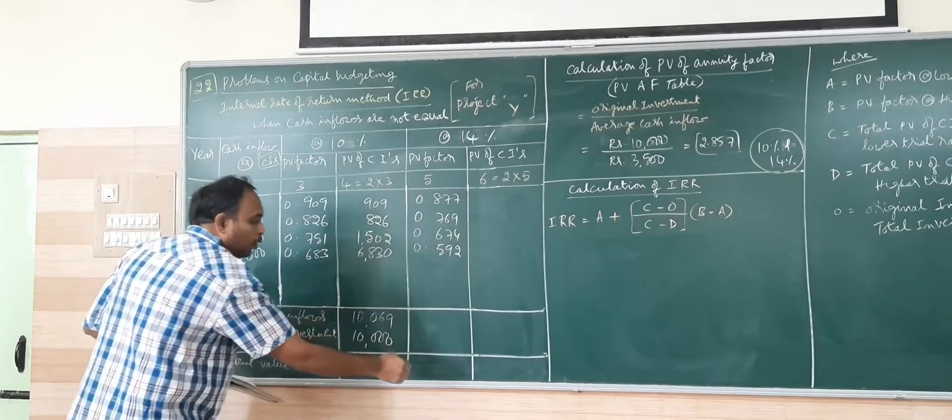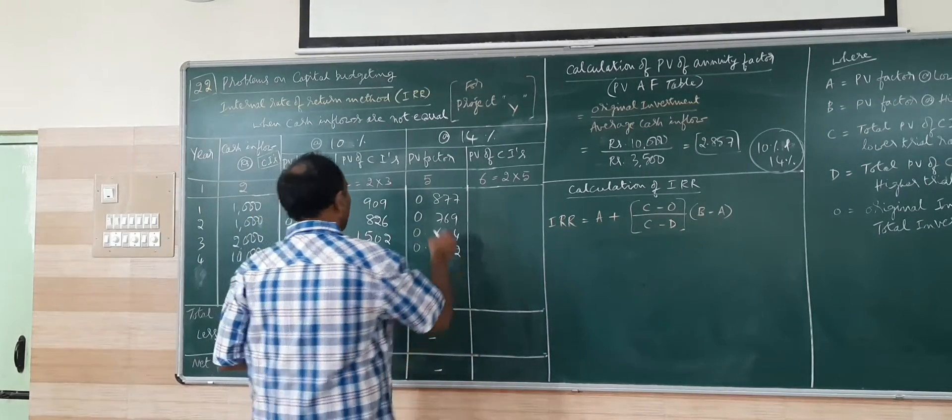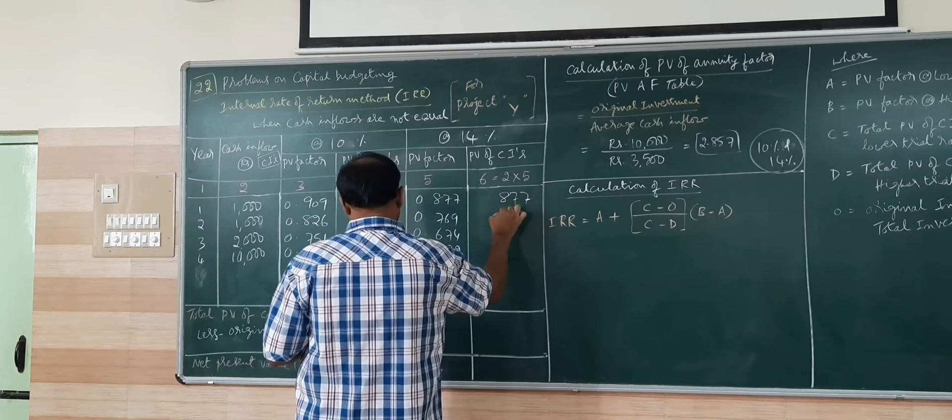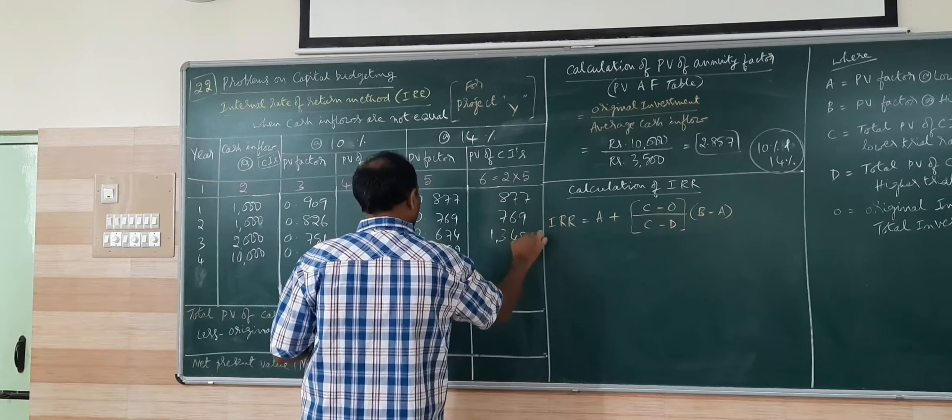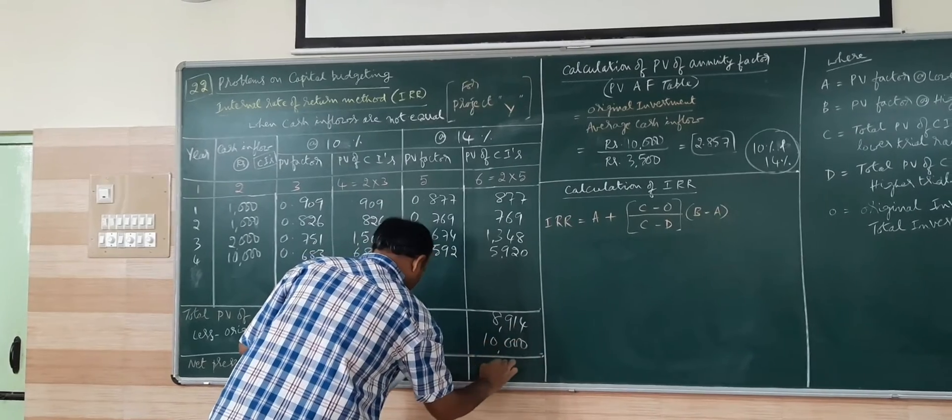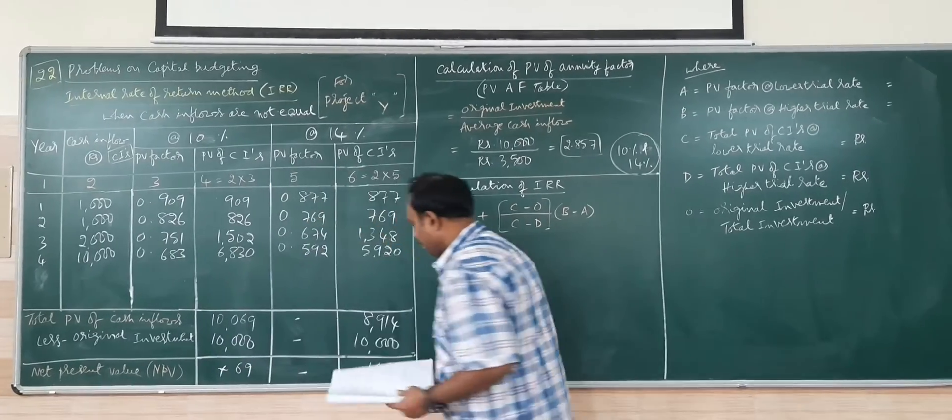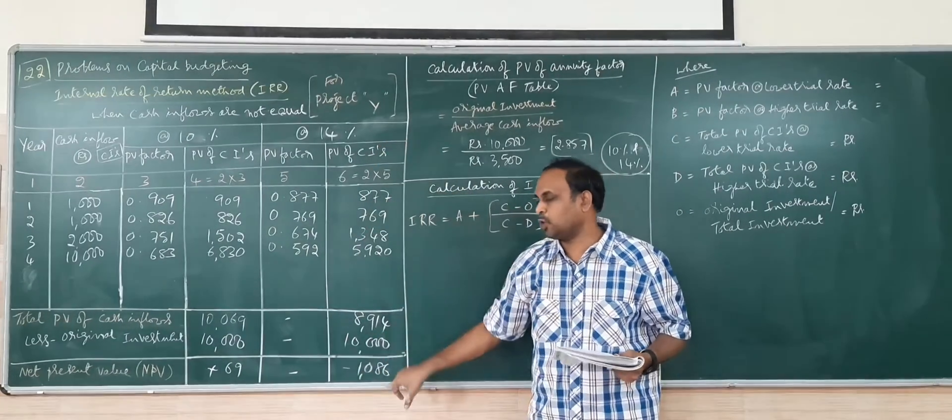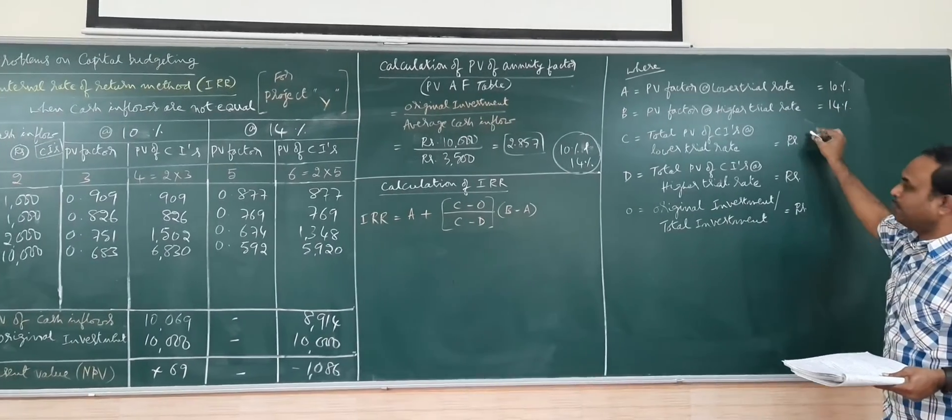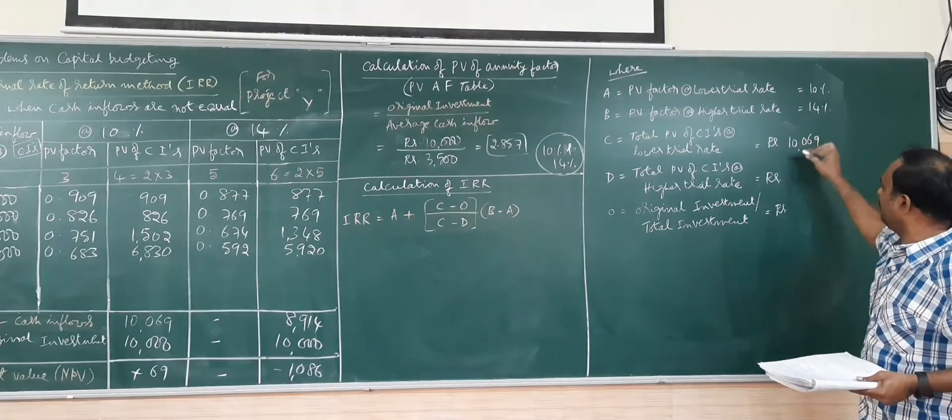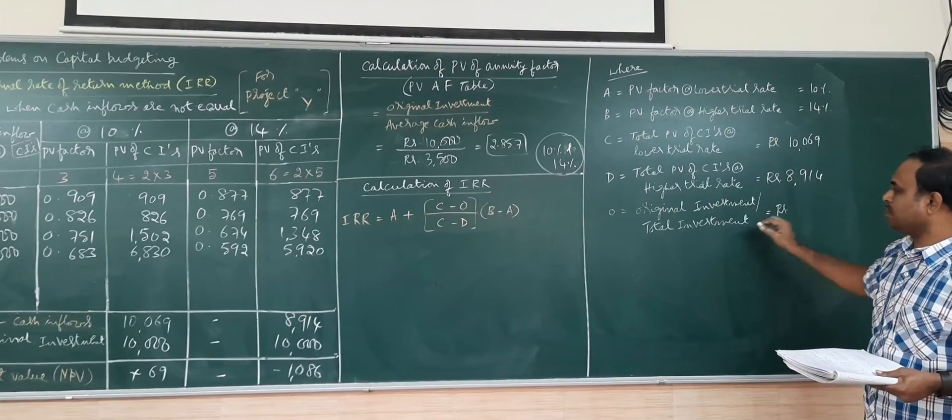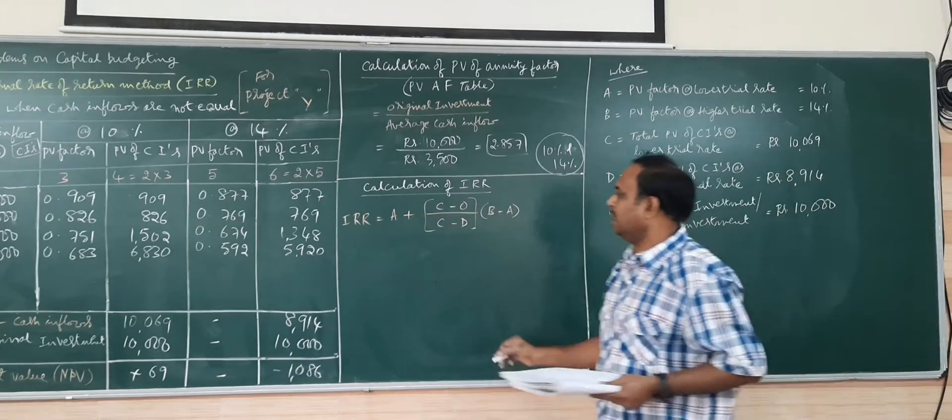If I increase the percentage, obviously I am going to get negative NPV at the higher rate. Again here, cash inflow into 14%. 877, 769, 1348, 5920. 8914. You are going to get a negative value here, minus 1086. Even if you do 12%, you are going to get minus only. For me, lower trial rate here is 10%, higher trial rate 14%. PV at lower trial rate total 10,069, then 8914 at higher rate. Initial investment is 10,000. Let me substitute and find the IRR here.